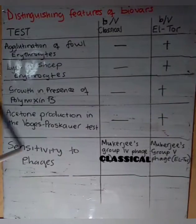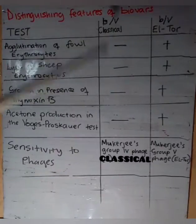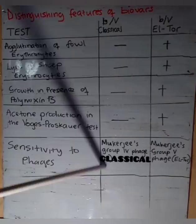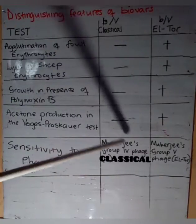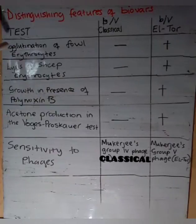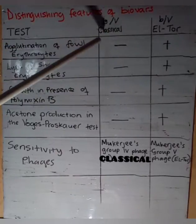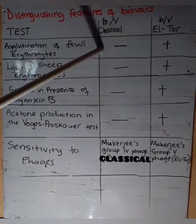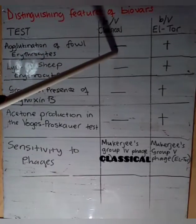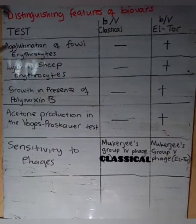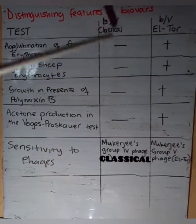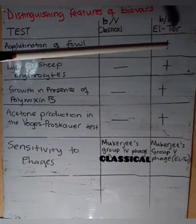On sensitivity to phages, Classical is sensitive to Mukherjee's group 4 phage C, while El Tor is not. To confirm: Classical does not agglutinate fowl erythrocytes, while El Tor does agglutinate. On lysis of sheep erythrocytes, there is no lysis in the Classical biovar but there is lysis in El Tor.